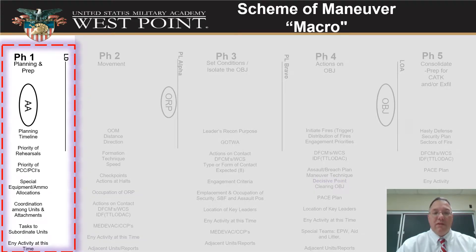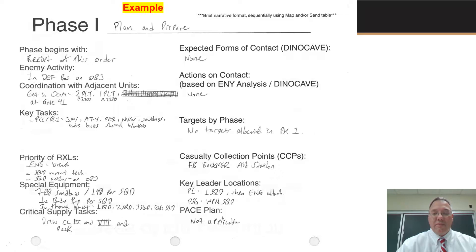In phase one, we're in the assembly area. What are all the things we're going to do while we're in the assembly area to get us up to the line of departure? What are the priorities of rehearsal? What's our timeline? When will op orders be issued? When are back briefs going to occur? PCIs, PCCs — what kind of tasks do we all have to do? How are we drawing any special equipment or ammo we need? Those are all things we need to detail in our scheme of maneuver for phase one. Here's an example from the battle book page that shows some of those things and how we might specify them.